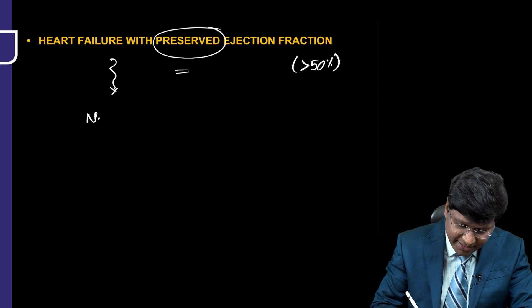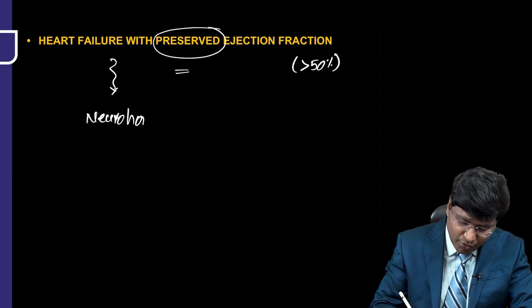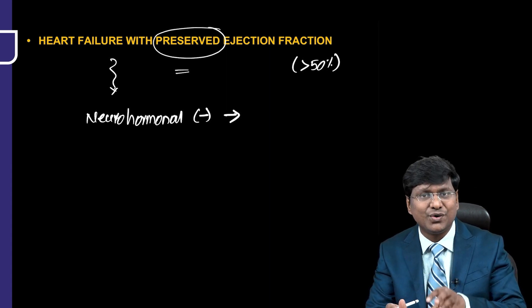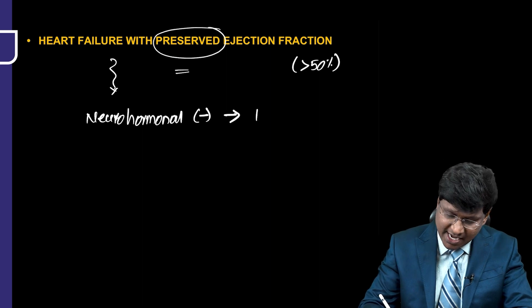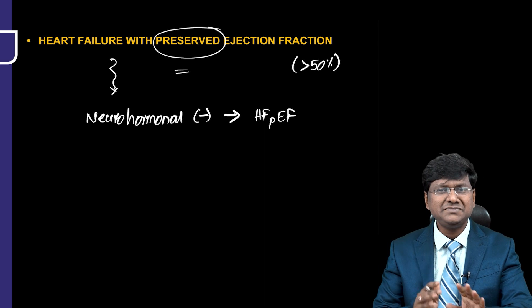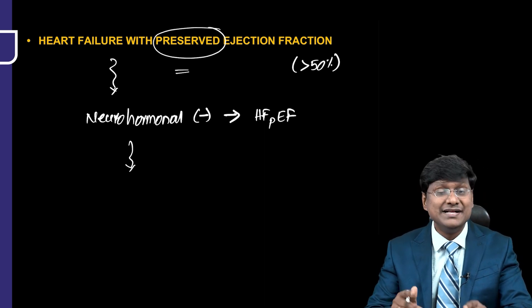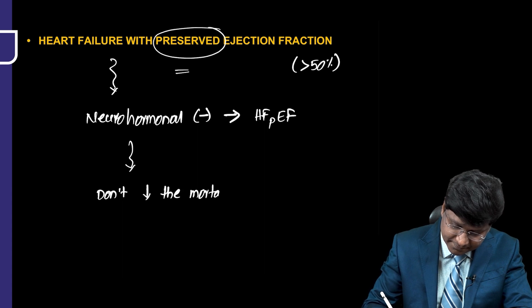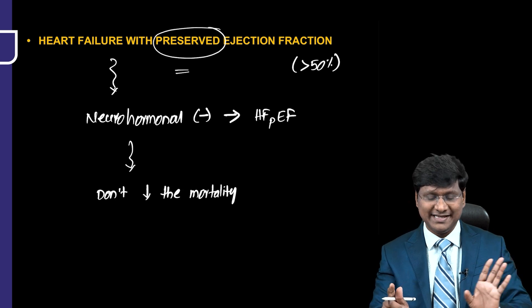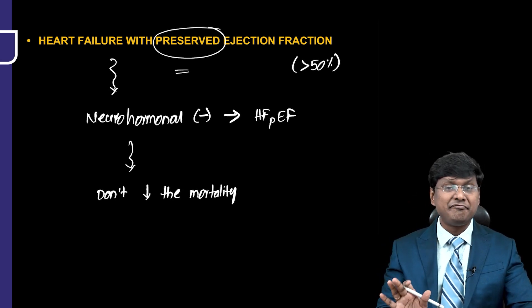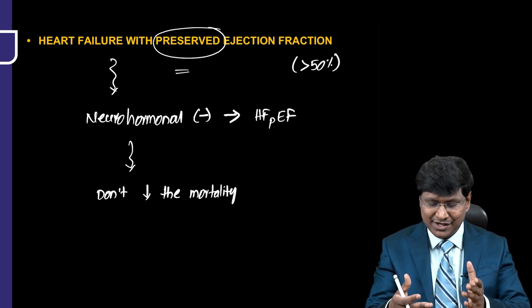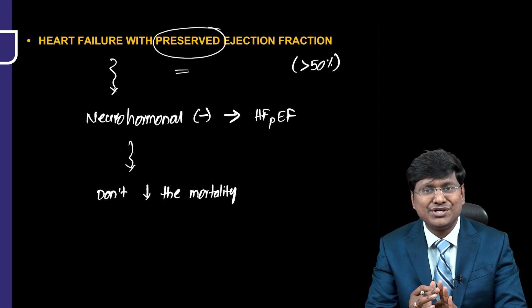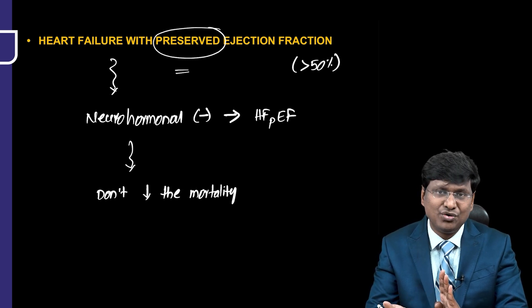There were many trials which found the usage of neurohormonal antagonists in case of heart failure with preserved ejection fraction. But all these trials have shown that neurohormonal antagonists don't decrease mortality. Beta blockers — no mortality benefit. ACE inhibitors or ARBs — no mortality benefit. Aldosterone antagonists — no mortality benefit. Neprilysin inhibitors — no mortality benefit.